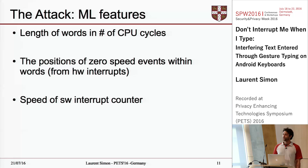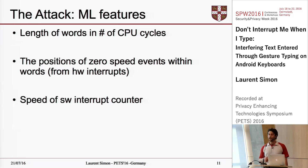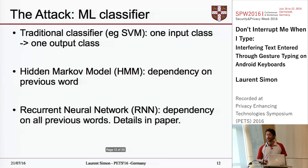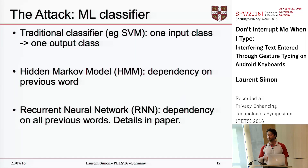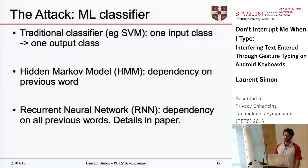To summarize, in terms of features we use: the length of the words, the position of the zero speed events for the letters, and the speed of the software interrupt counter — also known as the context switch rate. These features are then fed into a classifier.